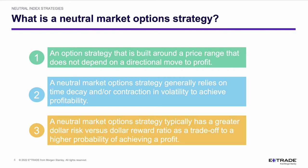A neutral market option strategy typically has a greater dollar risk versus dollar reward ratio as a tradeoff to a higher probability of achieving profit. We can set up a trade that may have about an 80% probability of generating a profit, and that profit may be one dollar, but the loss potential may be $3. Generally, investors look at that and say: I can lose three, but I can only make one. The tradeoff is going to be the probability of success or failure.